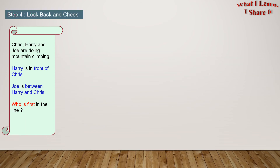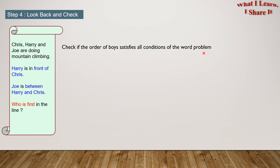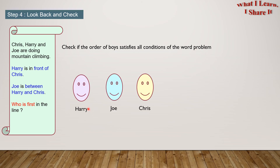Step 4: Look back and check. In this step, we check if the solution we provided in the previous step was correct or not. Let's check if the order of the boys satisfies all conditions of the word problem. The order we found was Harry, then Joe, then Chris. Harry is in front of Chris — yes. Joe is between Harry and Chris — yes. So that means Harry is first in the line, and we are correct!